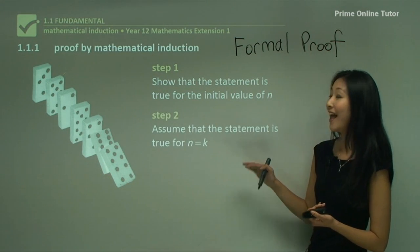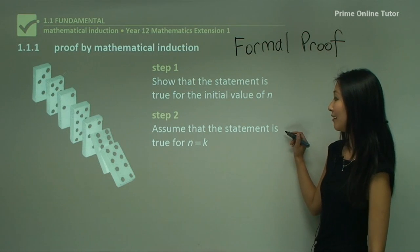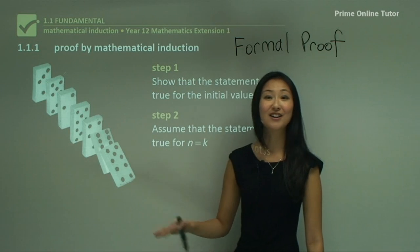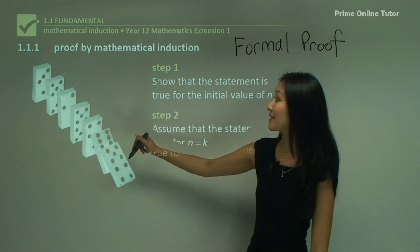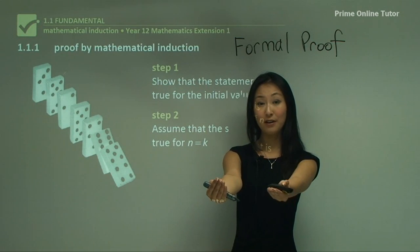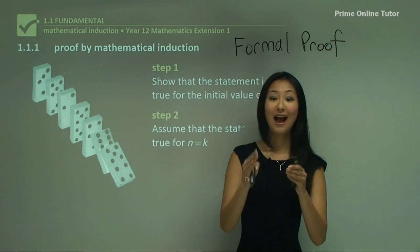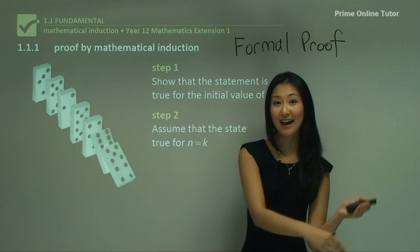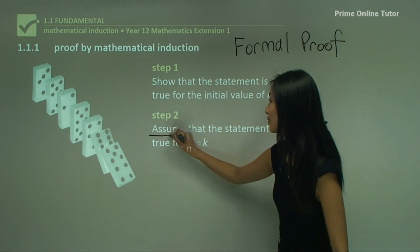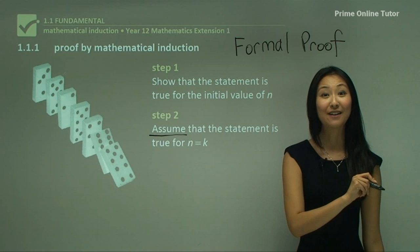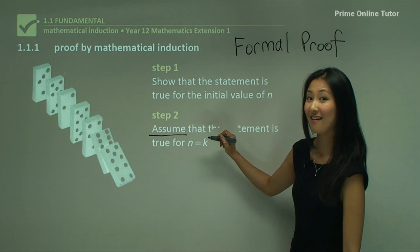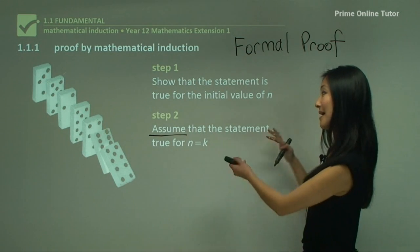Moving on to step two, this is where we assume that the statement is true for n equals to k. For our dominoes, each domino makes the assumption that if the domino in front of it falls, it's going to hit that domino, and that domino is going to fall and hit the next one. So we're making a basic assumption here, and the key word is assume. Whenever you write step two, make sure you have the word 'assume' in there — we're making an assumption that is the basis of step two.